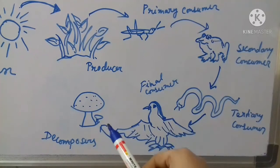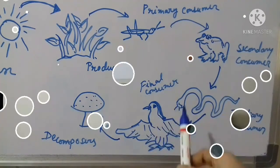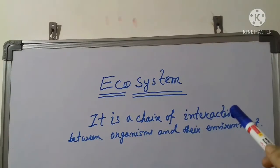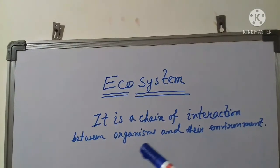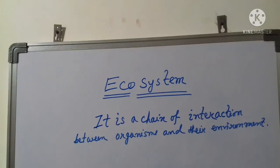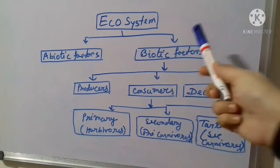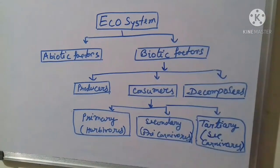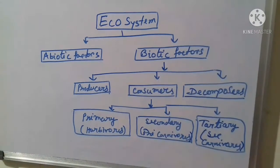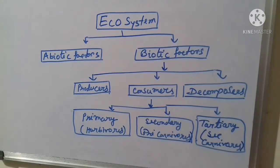Ecosystem is a chain of interaction between organisms and their environment. Ecosystem is divided into two factors: abiotic factors and biotic factors. Abiotic factors means non-living factors, and biotic factors means living factors.